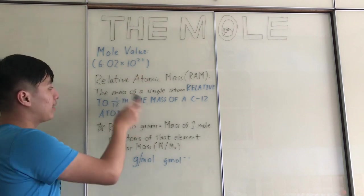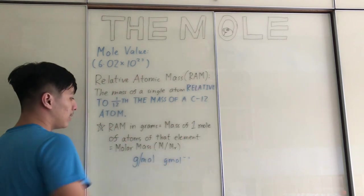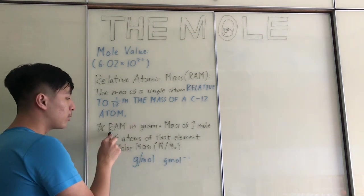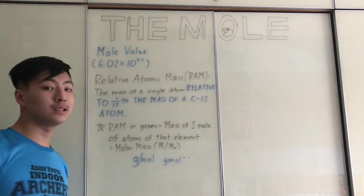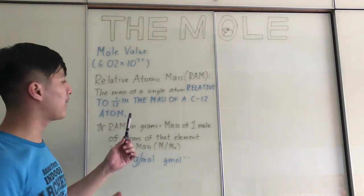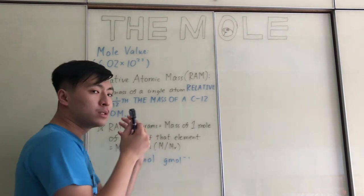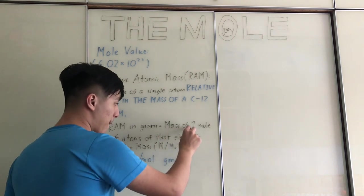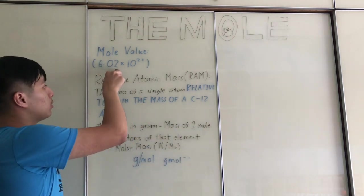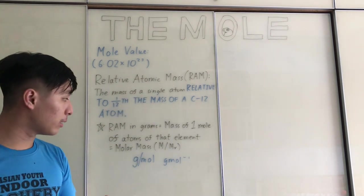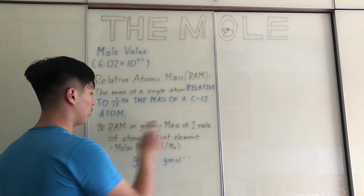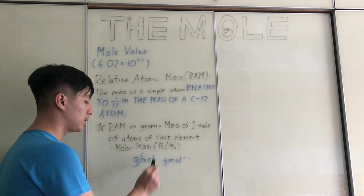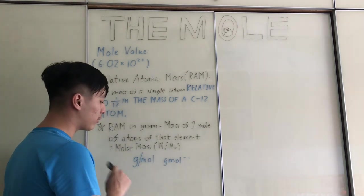Now we're going back to the mole value. Now that we know the definition of relative atomic mass, we can review the connection between the two. The relative atomic mass in grams of an element — such as helium, which has a relative atomic mass of about 4.00 — means that 4.00 grams of helium is equivalent to the mass of 1 mole of helium atoms, or 6.02 × 10²³ helium atoms. This is also equal to the definition of molar mass, denoted in grams per mole.